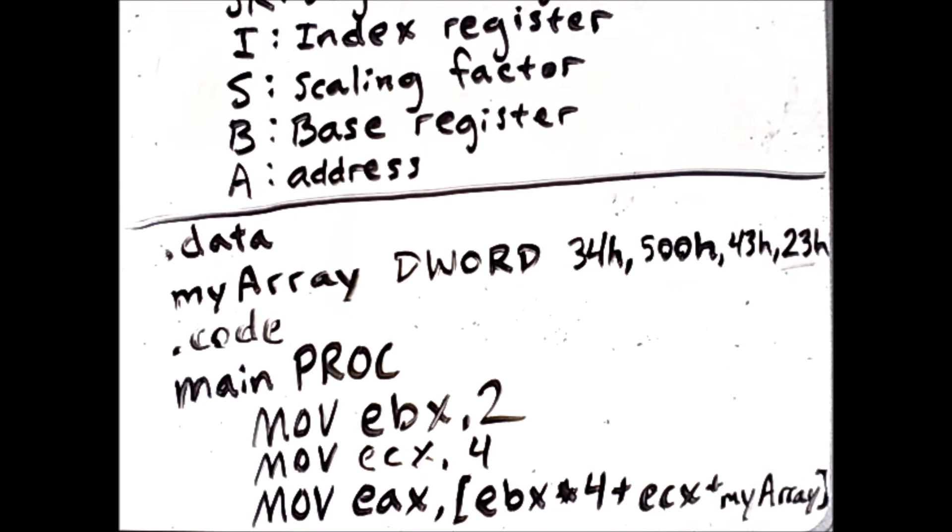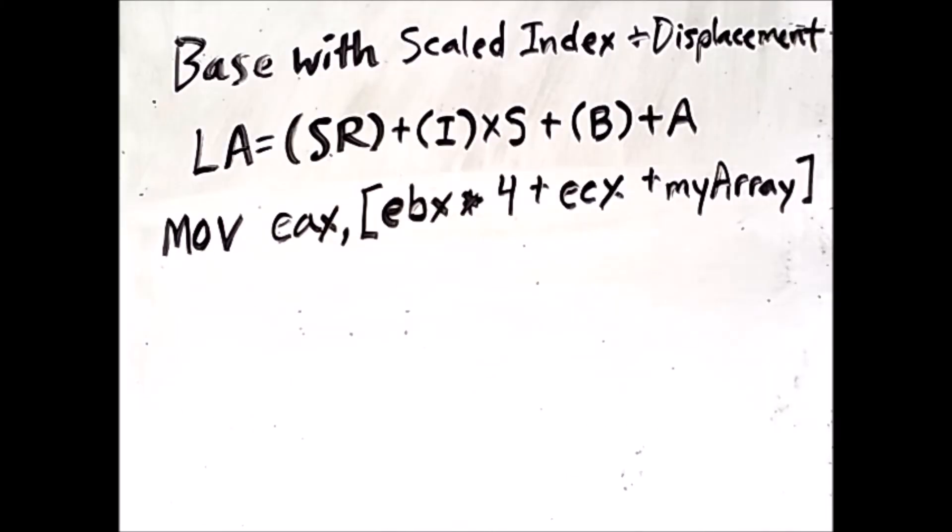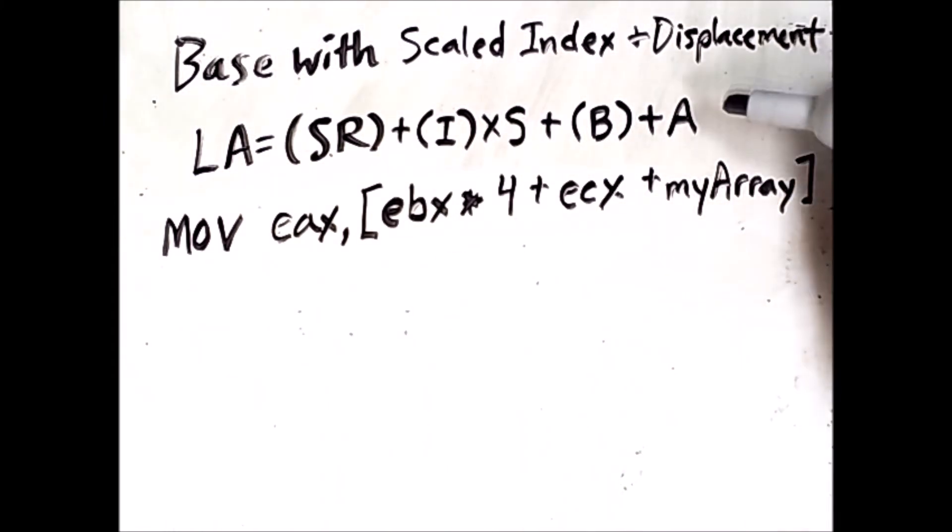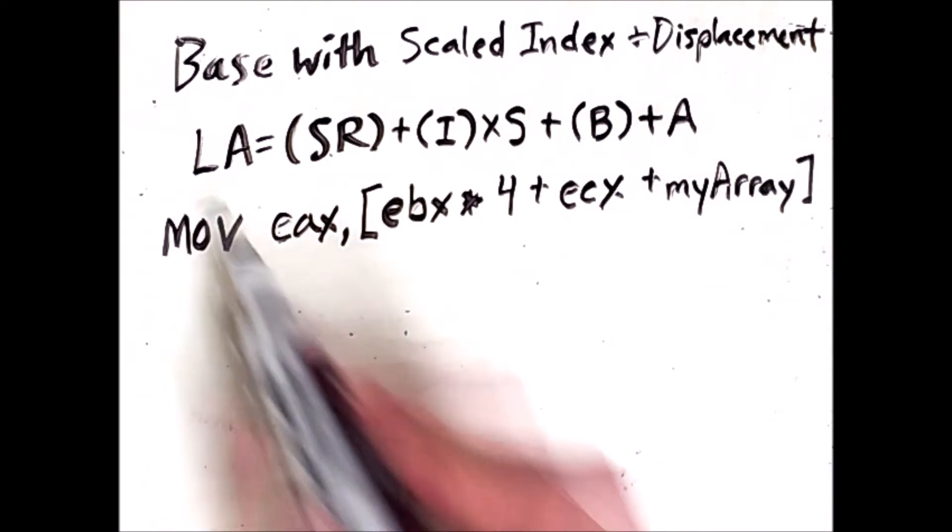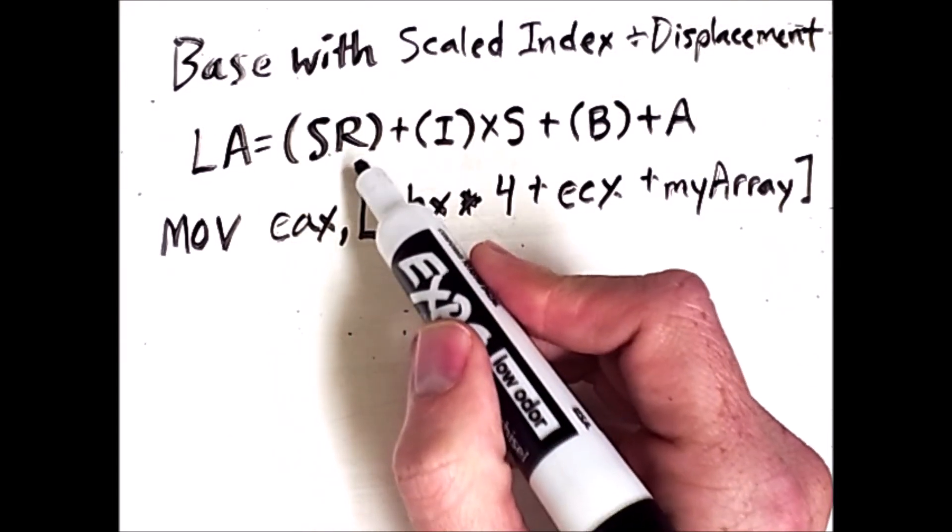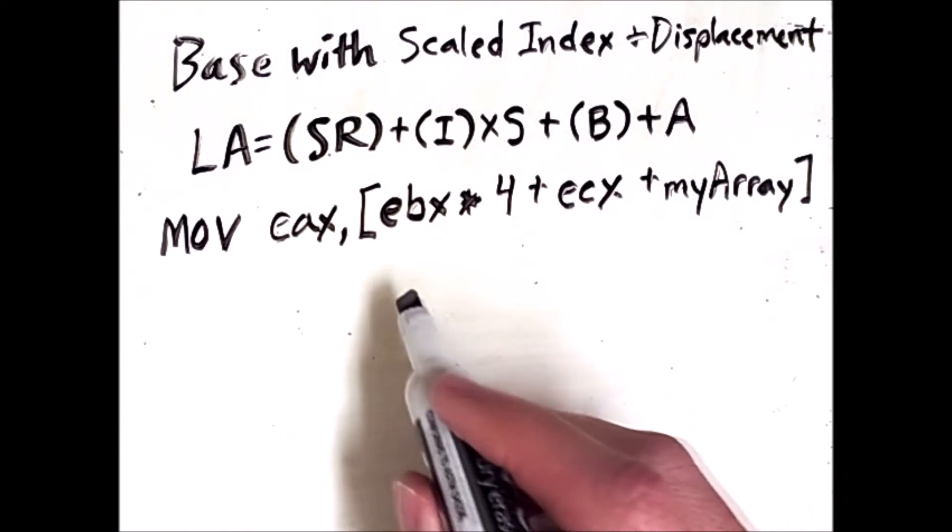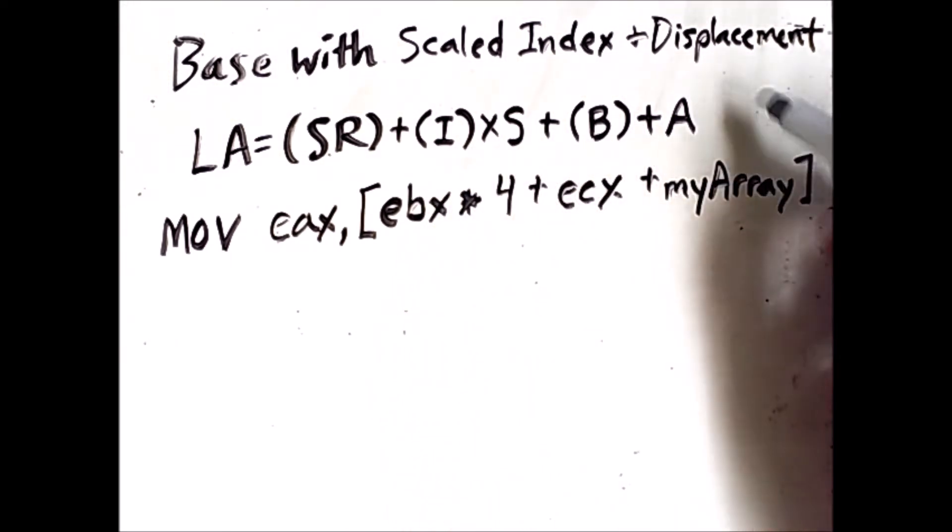So this value here is the hex value 23. Before moving on, let's compare this actual x86 command once again to this representation of what base with scaled index and displacement is calculating for its linear address. So as I said before, the segment register is implicit in this command. It is not here. It's the DS register, but that is not present. All the other components, however, directly correspond to components of this abstract formula.